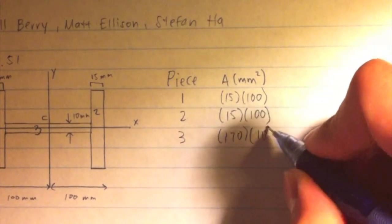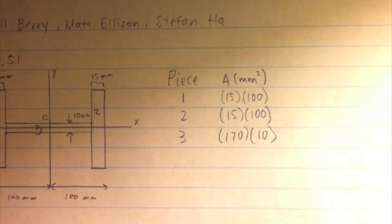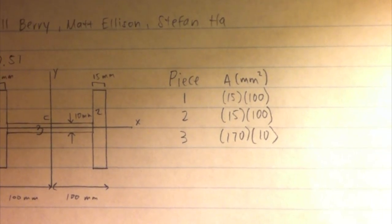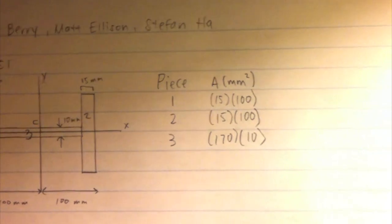First we calculate the area of each piece, the length times the width, obviously an easy calculation to make, and the area is in units of millimeters squared.